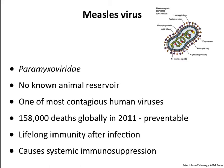Measles is an RNA virus with a negative-strand RNA genome; it's enveloped and a paramyxovirus. It only infects people with no known animal reservoirs, so it is eradicatable. It's highly contagious—reproductive index of 15—and caused 158,000 deaths globally in 2011. We have a vaccine, one serotype, and you get lifelong immunity. This is also one of the viruses that causes immunosuppression because it infects cells of the immune system.